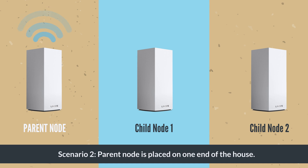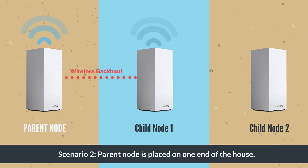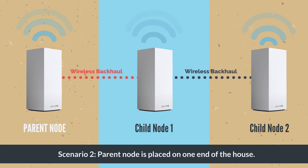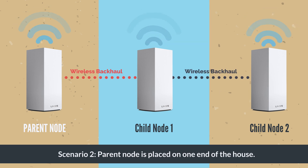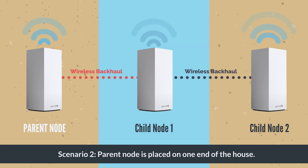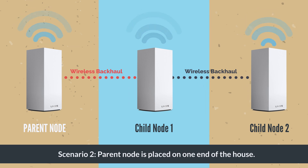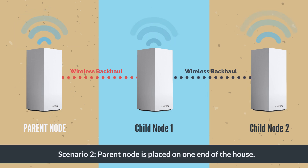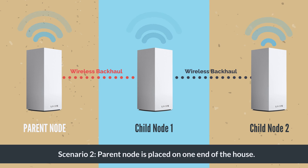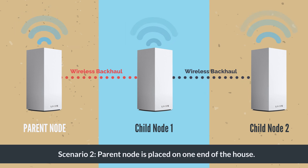In our second diagram, child node 1 is connecting directly to the parent node and child node 2 is connecting to child node 1. In this scenario, we can see that our nodes are daisy chained to each other using a wireless backhaul. In a daisy chain, one network node is attached to the next in a line or chain.